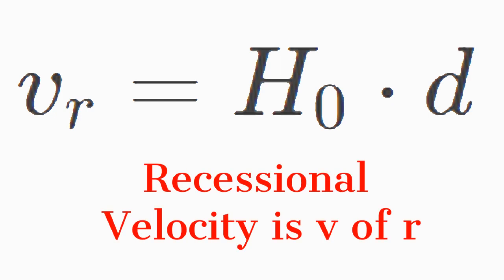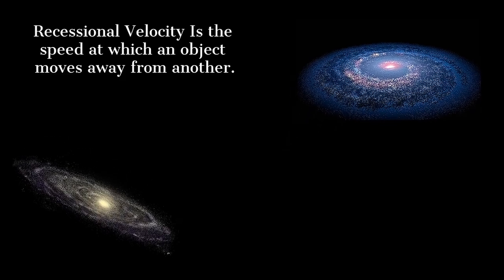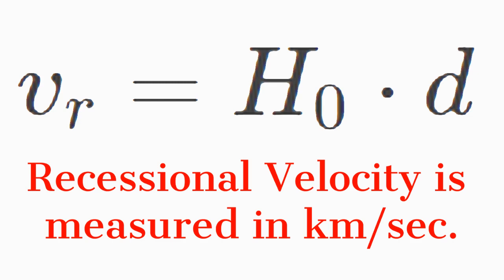Recessional velocity is v and was already discussed. It is simply the velocity at which an object moves away from the viewer if it does. Recessional velocity is commonly measured in kilometers per second.